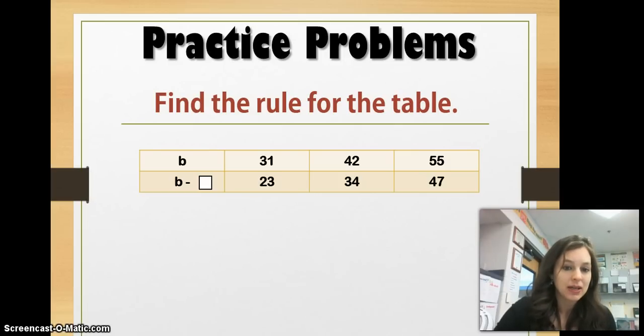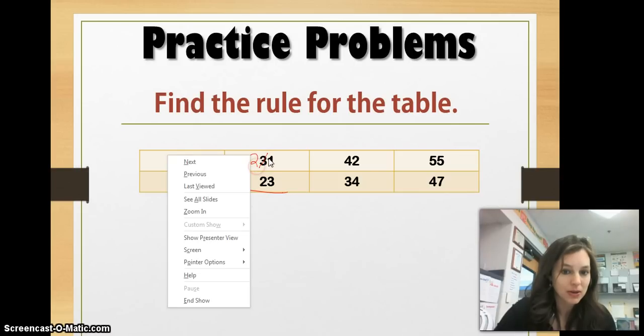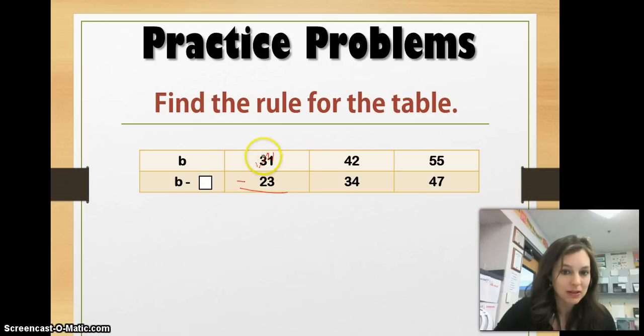So, we have B equals 31, 42, and 55. And we have our rule as being B minus something. And we have 23, 34, and 47. So, we'll want to see what the difference is here. 31 minus 23. I could even just use this table as my subtraction point here. And I go 1 minus 3, I can't do. So, I'll go next door and borrow. So, I have now 11 minus 3, which is 8.